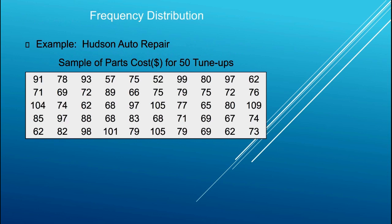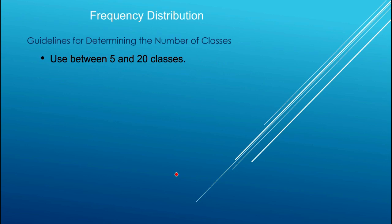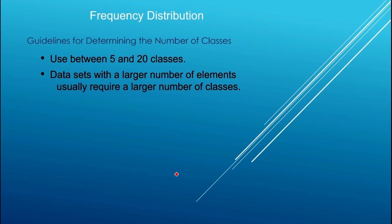Here's an example: Hudson Auto Repair, a sample of parts cost for 50 different tune-ups, so n equals 50. It's hard to discern much from just looking at this table. The guidelines for determining the number of classes are to use between 5 and 20 classes. Fewer than 5 classes doesn't allow us to see the true distribution; more than 20 may leave some classes empty. Data sets with more elements usually require more classes.